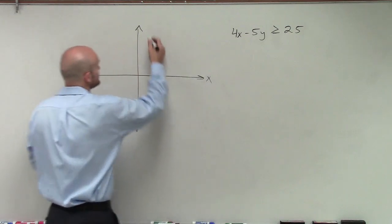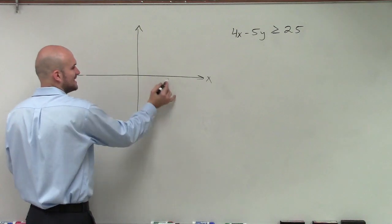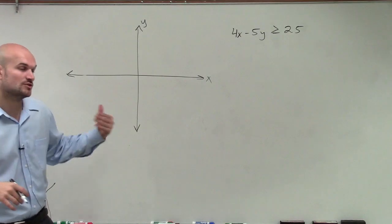So remember the x and y intercepts. The x-intercept is when the graph crosses the x-axis, and the y-intercept is when the graph crosses the y-axis.